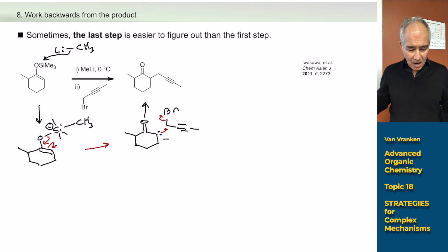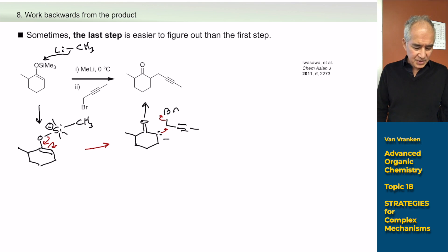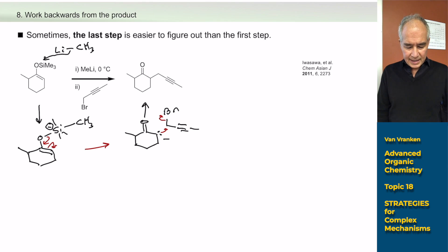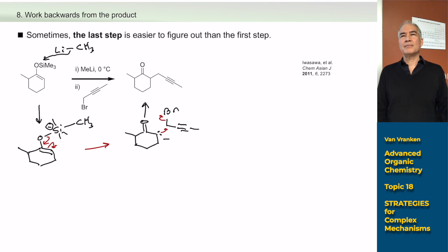Those are powerful basic strategies. Now that you know a lot of elementary polar arrow pushing steps, you can combine that with some strategic thinking to get plausible pathways. I don't ask you for the single right arrow pushing mechanism — I ask you for a plausible one. Sometimes there is more than one plausible way to draw things out.